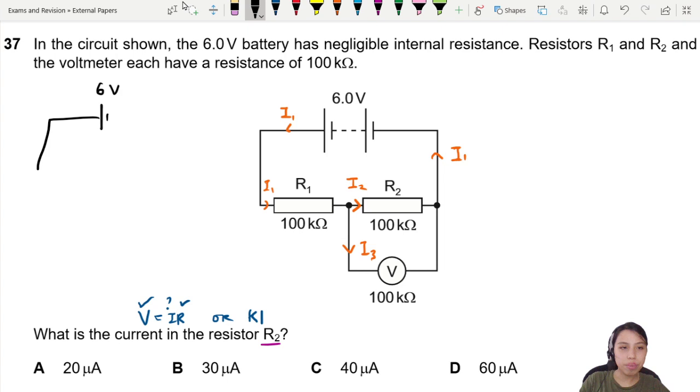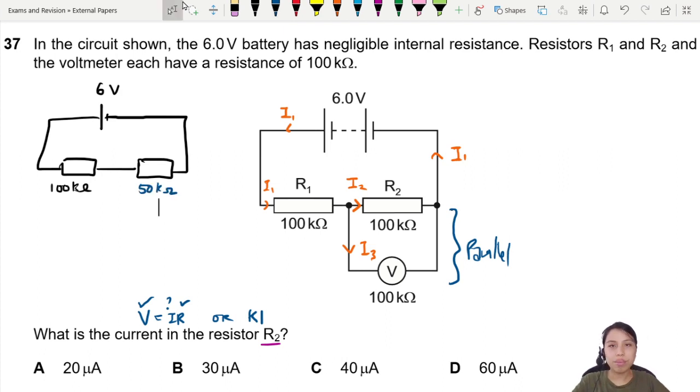So this is six volts. We have one section, two section. This one is our 100 kilo ohm. Now this other side, when you combine in parallel, these two are in parallel. So when you combine them, they become 50 kilo ohm. And it's strange, if you put it in parallel, the resistance become half. I calculate for you already.